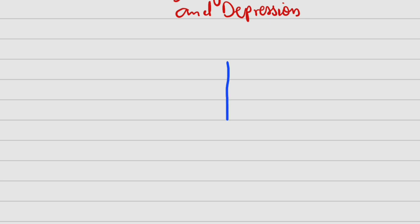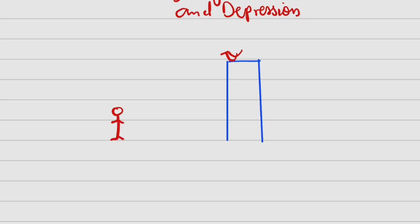Suppose we have a building right here, something like this, and it happens we have a bird at the top. The bird is situated right here. And let's assume we have someone standing here on the same horizontal ground — you can see the ground level here — and let's assume also that this person is directly looking at the bird. So we have a line of sight; this is the line of sight.